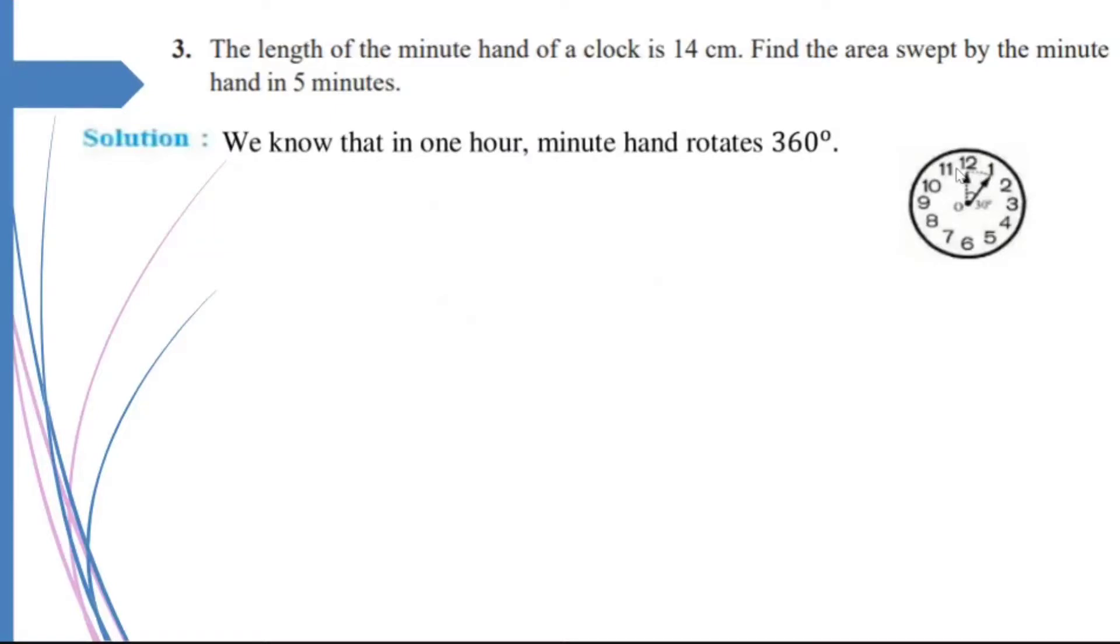In one minute, how much will it rotate? It will rotate 360 upon 60 degrees. So, in one minute, it will rotate 360 upon 60, which is equal to 6 degrees. So, if I take it for 5 minutes, it's going to be 360 upon 60 into 5, which comes out to be 30 degrees.